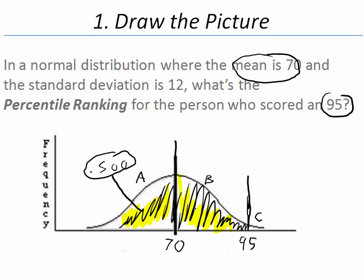What we don't know is the second area between 70 and 95. And that is going to be the focus of what we are doing going forward. We want to find out what is that proportion equal to.